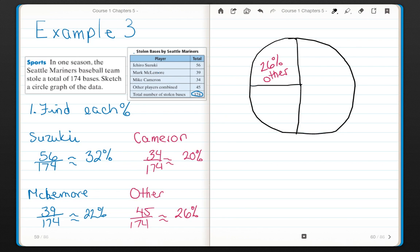I'm going to draw my line just a little bit off to the side, so it's not quite straight across. Now Suzuki got 32%, so his portion is going to be a little bit bigger. So this is 32% for Suzuki, and this is 20% for Cameron.